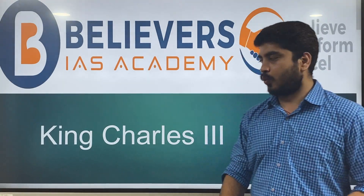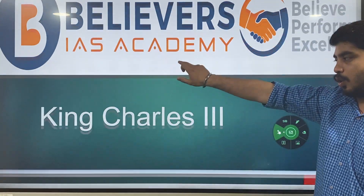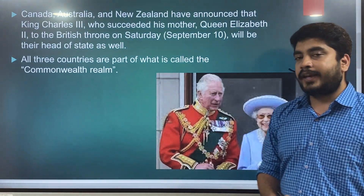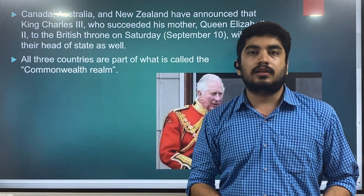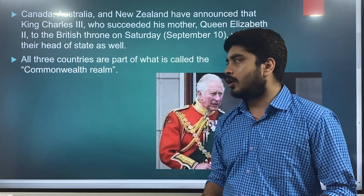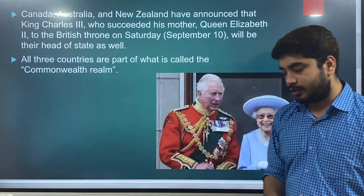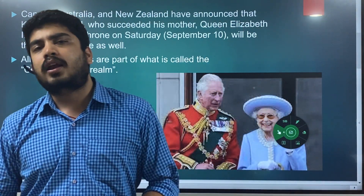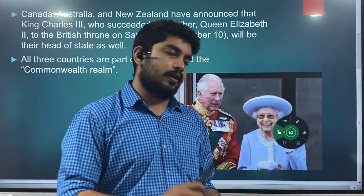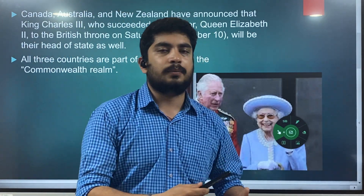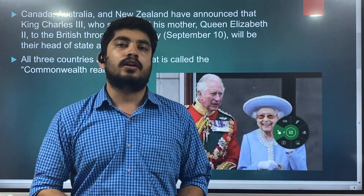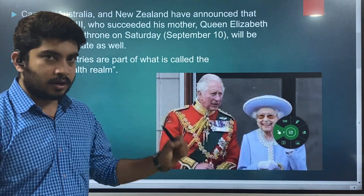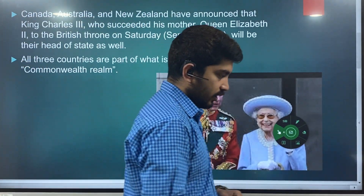Hello everyone. As you all know, with the death of Queen Elizabeth, King Charles III will be the new king — he has assumed the throne in Britain. With this, countries such as New Zealand, Canada, Australia, and some other countries will be getting a new head of state. That is, King Charles III will be their new head of state.